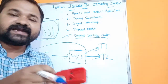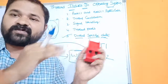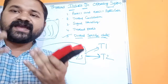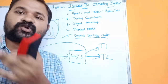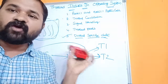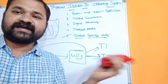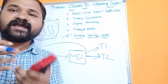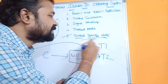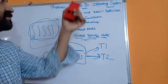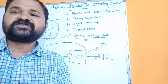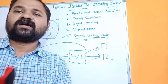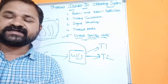For thread-specific data, every programming language provides its own syntax. In C#, you can create thread-specific variables using dedicated syntax. For Java threads, there are specific syntaxes to create thread-local data. For POSIX threads (pthreads), there are also syntaxes to create thread-specific data. These are the 5 threading issues that need to be considered while implementing threads in an operating system.